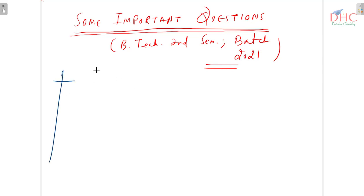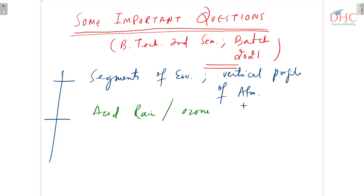Focus on segments of environment and then vertical profile or we can see temperature profile of atmosphere. Then the second is acid rain, an important question that can be asked at an examination. Ozone layer also, and then we have greenhouse effect or global warming.